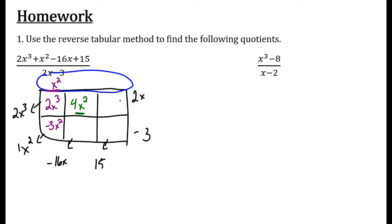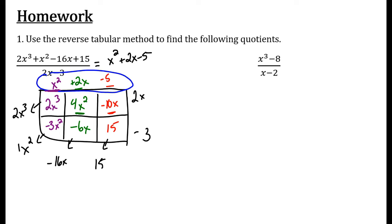We now say: what times 2x gave me 4x squared? That would be a positive 2x. Multiply down: 2x times negative 3 is negative 6x. What minus 6x gives me negative 16x? Negative 10 minus 6 gives me negative 16. What times 2x gives me negative 10x? Negative 5 times 2x gives me negative 10x. Negative 5 times negative 3 is 15, which is what I wanted. My answer is x squared plus 2x minus 5, because x squared plus 2x minus 5 times 2x minus 3 gives me my dividend.